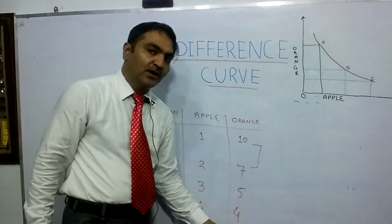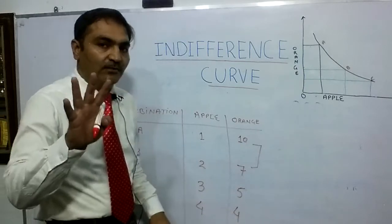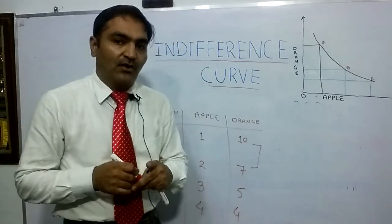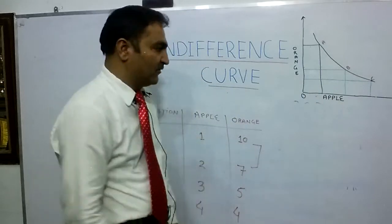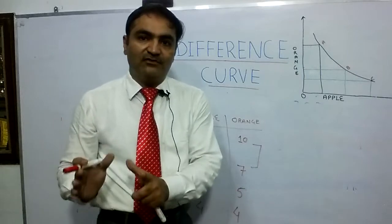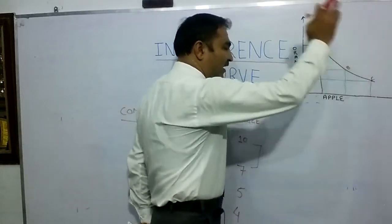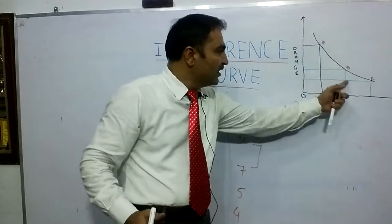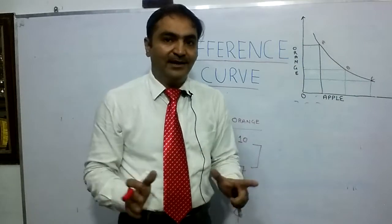So we have four combinations: A, B, C, D. What is indifference curve telling us? Indifference curve is a locus — a path of points — on one side is apple, on the other side is orange, which gives equal satisfaction to the consumer. Whether it is point A, point B, point C, or point D — on all combinations the consumer gets equal satisfaction.